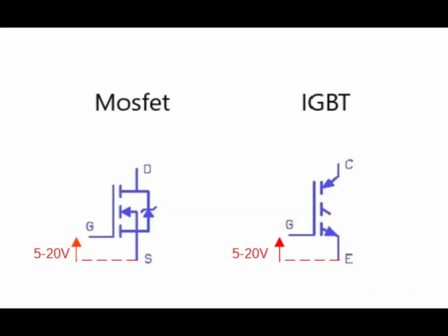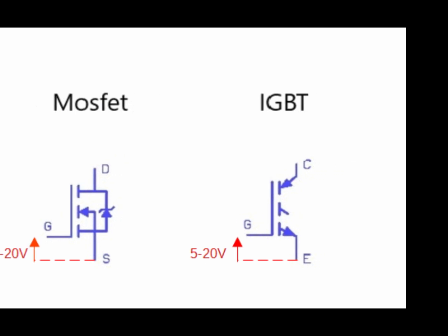Most MOSFETs and IGBTs turn on when their gate is raised to about 5 to 20 volts above their source or emitter. If this voltage is too high it can damage the switch, and if it's too low the switch won't turn on properly, so please check the data sheet for your particular chosen switch.